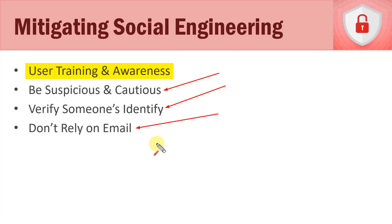If something is within your organization and has somebody's name and a phone number, pick up the phone and call them to verify it. Don't trust email. Social engineering is always going to be out there, but the best way to reduce your level of risk is with user training and awareness that teaches people to be suspicious and cautious, to verify people's identities, and to not trust email.